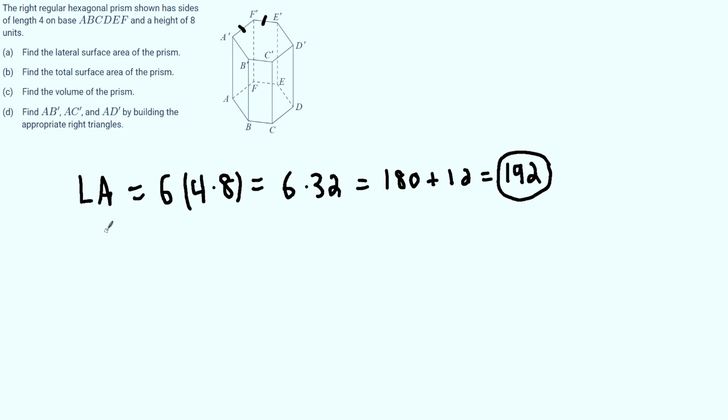Now we can find our surface area. So surface area is equivalent to the lateral area plus the areas of the two bases. So 192 plus the area of my two bases. Now what would that be?